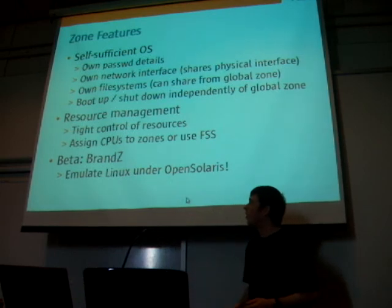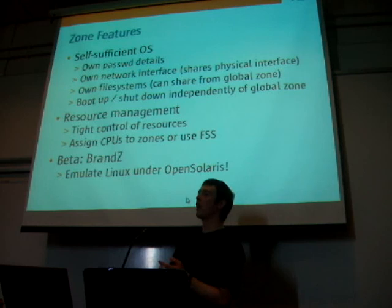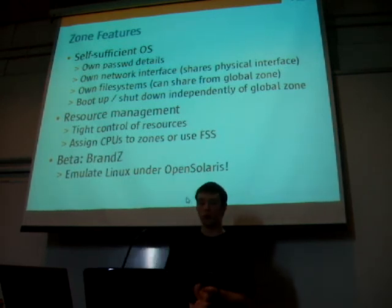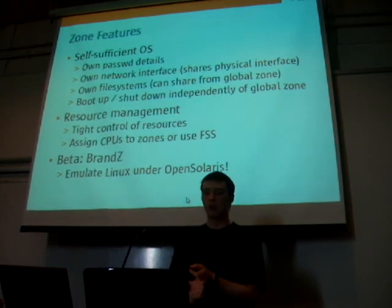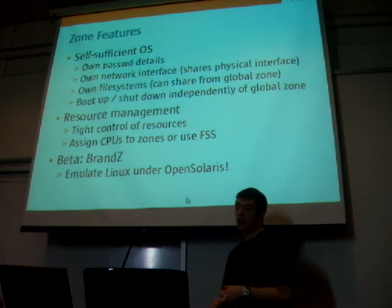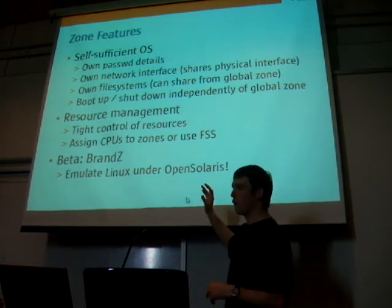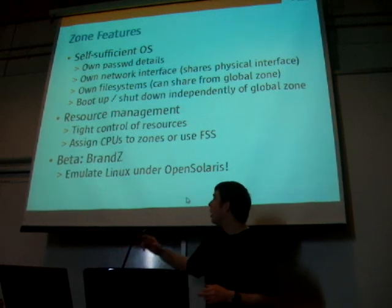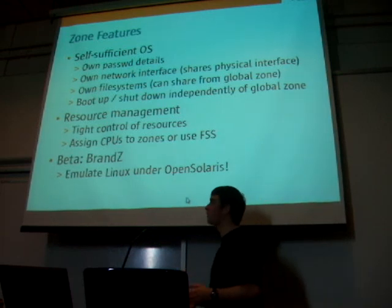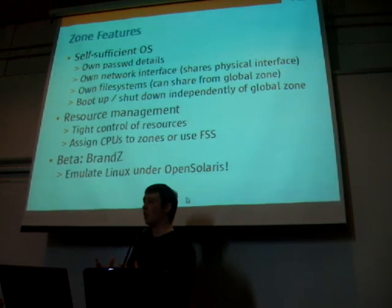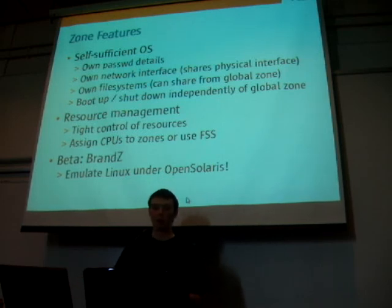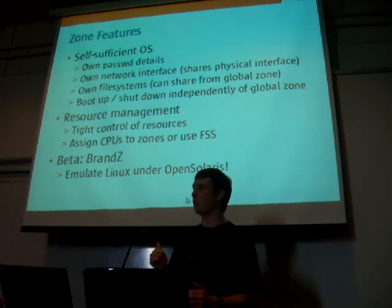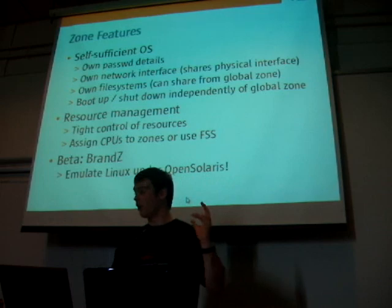There's a beta feature called Brand Z. You can have different types of zones — zones which emulate older versions of Solaris, just normal zones, and IPS package zones which are the new type used under OpenSolaris. You can also have Brand Z, which is more of an experimental feature than something you'd use in a production server. What it can do is emulate Linux under OpenSolaris, so you've got an OpenSolaris zone but it's running Linux and you can run Linux binaries on top of that. I've never tried it so I don't know how stable it is — I don't think it's very stable — but it is there if you want to play with it.